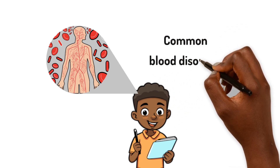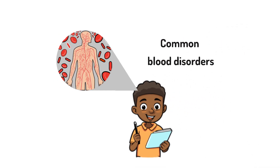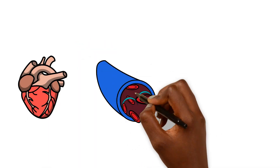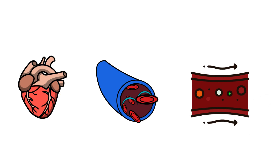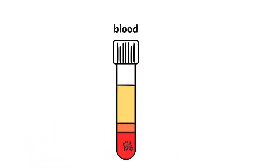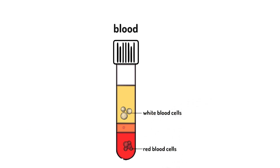In this lesson we'll look at common blood disorders. Understanding the functions of the heart, the blood vessels and the blood helps us appreciate not only how our body works, but also how things can go wrong. Our blood contains red blood cells, white blood cells and platelets, and they're all swimming in a liquid called plasma.